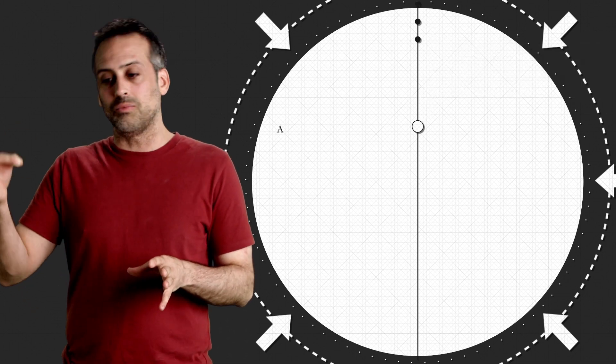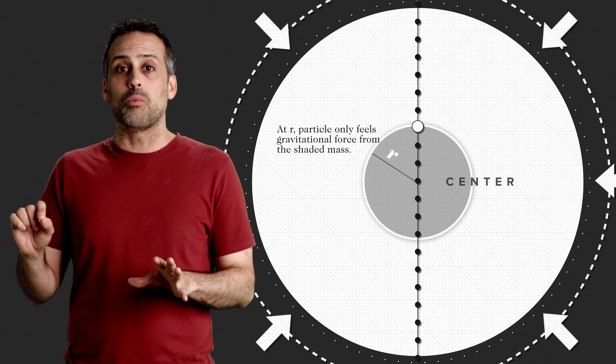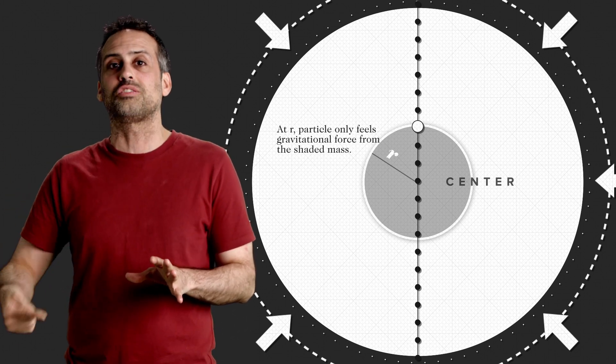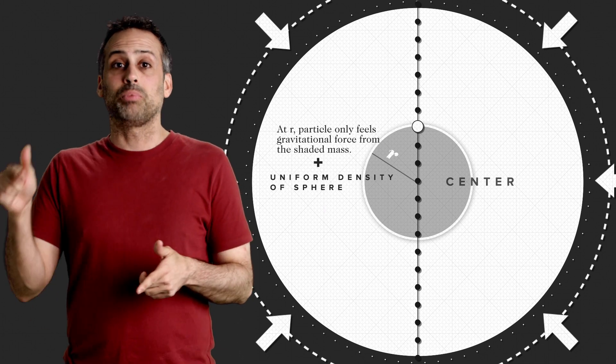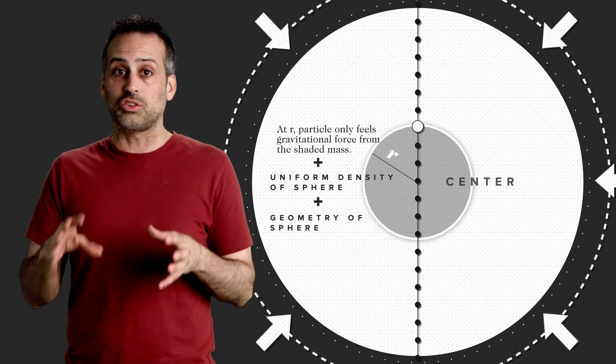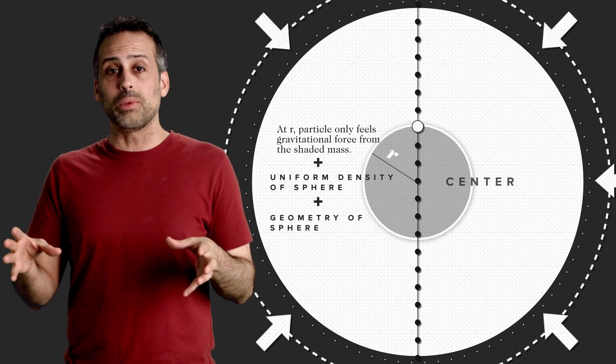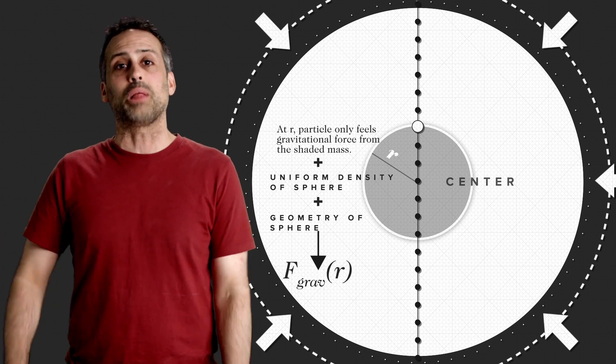At any given location inside the planet, the particle will feel only the gravitational force from whatever mass is closer to the center of the planet than the particle is. With that fact, plus the fact that the density is uniform, plus some basic geometry about spheres, you should be able to get a formula for the gravitational force on the particle when it's a distance little r from the center of the planet.